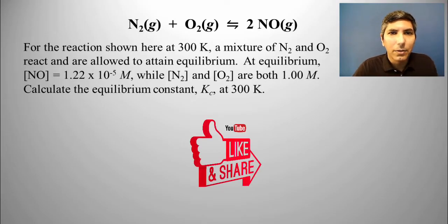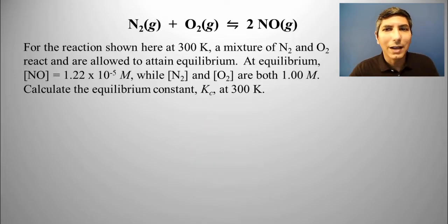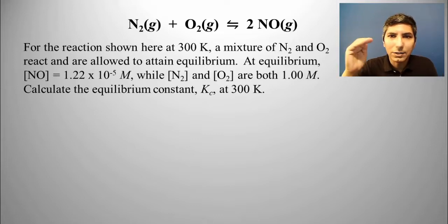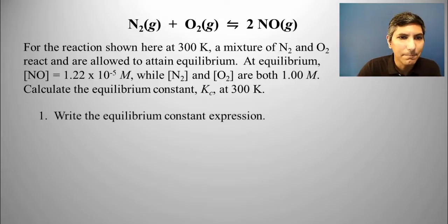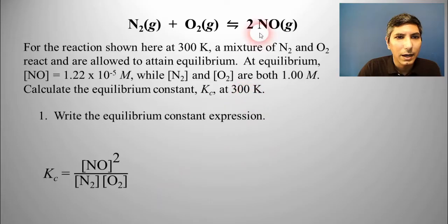So once again, the first thing we have to do is write the equilibrium constant expression for this reaction. Just like we learned in the last video, it's products over reactants raised to the power of the coefficient. So that's going to be Kc equals concentration of NO squared all over N2 times O2 concentration.